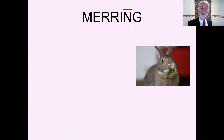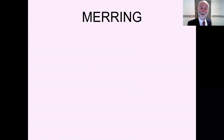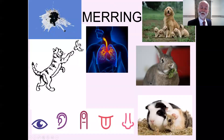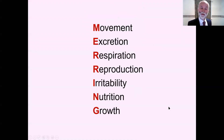N — well, we've met that one as well. This is for nutrition. It looks like this rabbit's having a nice bit of greenery. Nutrition — taking in goodness to help you grow, help you live, help you have energy. And finally G is for growth. This little guinea pig will grow to get bigger like the big guinea pig. MRS GREN.